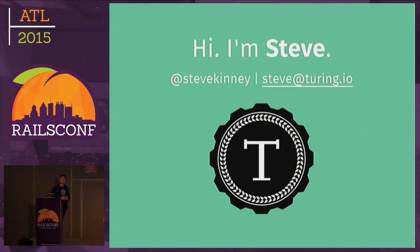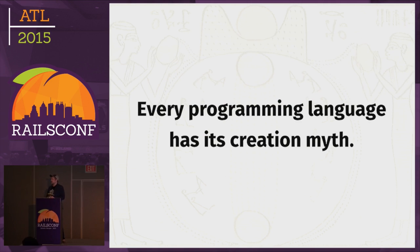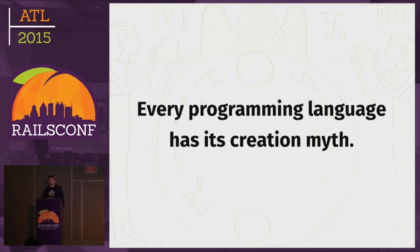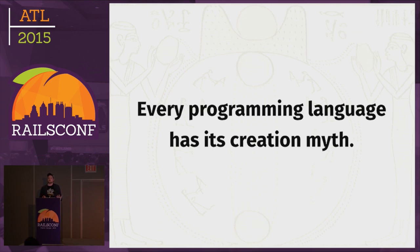I was a liberal arts major, not a computer science major — I majored in sociology — so I'm really interested in the origin story of programming languages. You'd think with something that's like ones and zeros, there would be a right answer for how you do programming. But it turns out there's not. There's a bunch of trade-offs. There's only one version of physics, but we've got like 9,000 languages. So I'm really interested in what were the decisions, what were the priorities in how that language came to be.